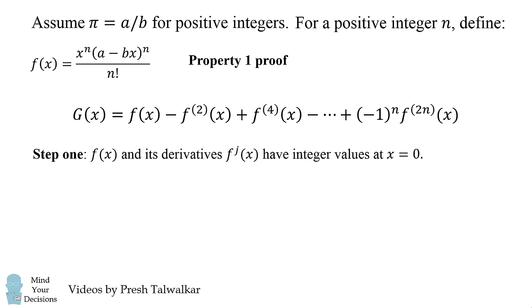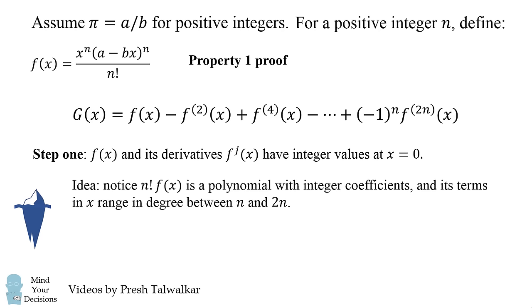Now what's the point of defining this function? Well, first we're going to show that f(x) and its derivatives have integer values at x equals 0. This is an iceberg step. In Niven's proof, there's not much justification and you have to work out the details. I'm going to present it much like Niven's proof. The idea is to notice that n factorial times f(x) is a polynomial with integer coefficients and its terms in x range in degree between n and 2n.